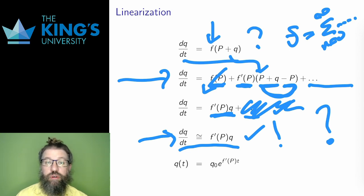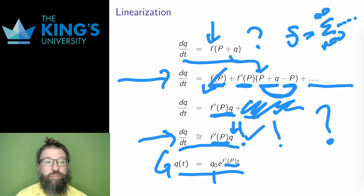A first order linear autonomous equation is just a percentage growth equation. F prime of capital P is a constant. Q is the function. So then this is solved by an exponential. Q equals Q0 for some starting value, and then E to the F prime of Pt. The constant in the equation becomes the growth rate in the exponential, as always happens for the percentage growth equation.